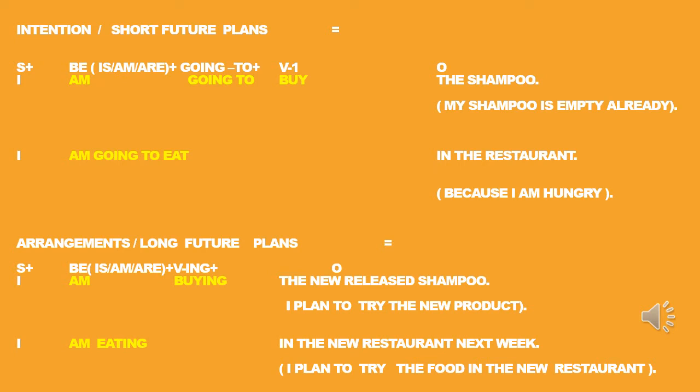For example: 'I'm going to buy the shampoo.' 'I' is the subject, 'am' is the be verb, 'going to' is the formula, 'to buy' is the verb one, and 'the shampoo' is the object. So 'I'm going to buy the shampoo' — my shampoo is empty already, so you cannot go back. You may not cancel it.